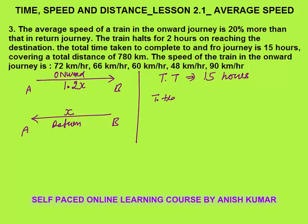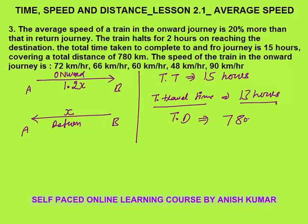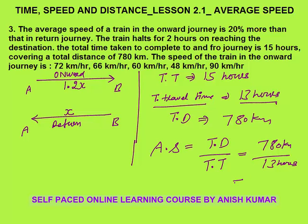Total time is 15 hours, of which the train halts for 2 hours. So actual travel time = 13 hours. Total distance A to B and back is 780 km. Average speed = total distance ÷ travel time = 780 ÷ 13 = 60 km per hour. It is very important to use 13 hours, not 15, because 15 includes the 2-hour halt.